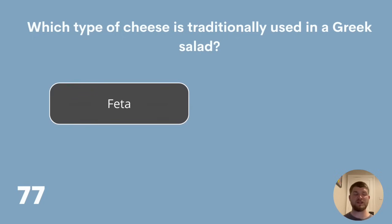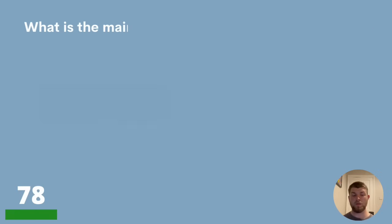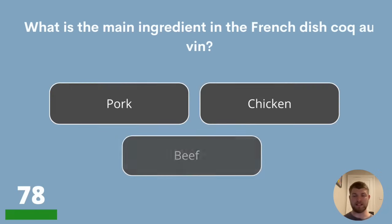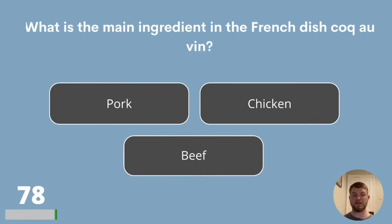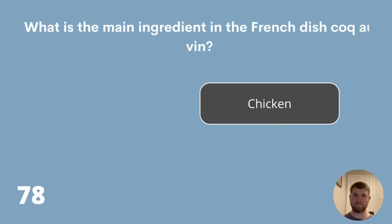Question 78. What is the main ingredient in the French dish Coq au vin? Pork, chicken or beef? The answer is chicken.